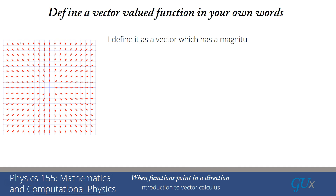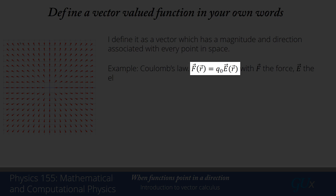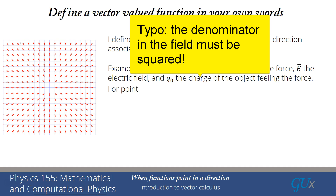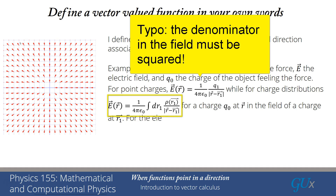For me, I define it as a vector which has both a magnitude and a direction which is associated with every point in space. An example of where this comes up in physics is Coulomb's Law. The force at a position r is q₀ — the charge of the particle at position r — times the electric field at position r. The electric field from a point charge q₁ located at r₁ is (1/4πε₀) · q₁ · (1/|r - r₁|). If instead we have a charge distribution, we integrate with charge density ρ(r₁) over all positions r₁. The electric field is essentially a force per unit charge.